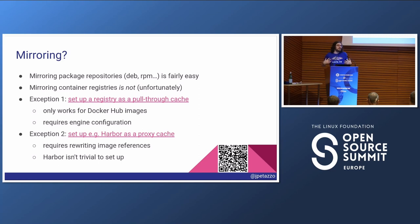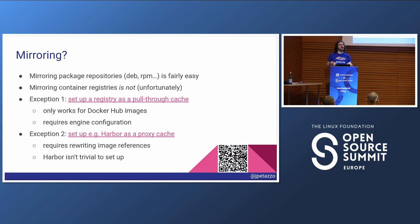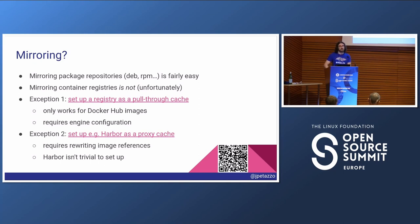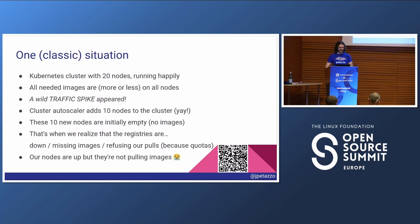If you're an old-school sysadmin, you might think: 25 years ago when I was installing Debian, I had a Debian mirror. Why can't we have a registry mirror? We kind of can, but because of early technical decisions in the architecture and protocol around registries, it's not easy to mirror registries. I'll talk about alternatives including mirroring a bit later when I compare QUIC to other options, but long story short, we need something a little bit more advanced than that.